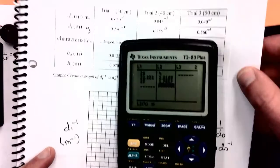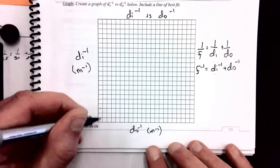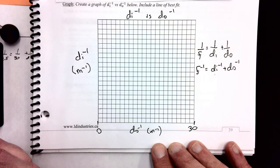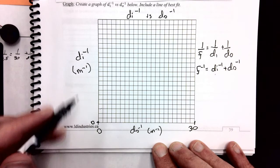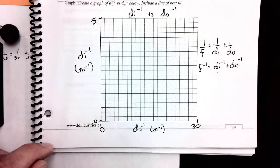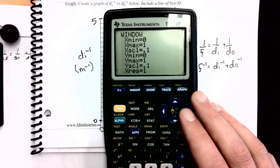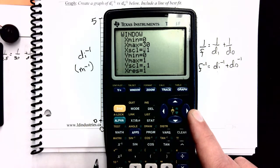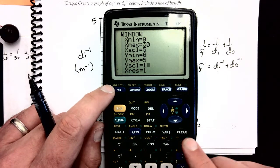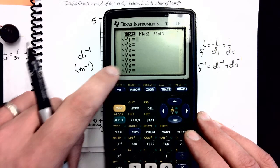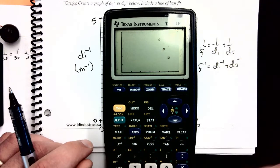For my x values I can probably go between 0 and about 30, since my biggest x value was 25. For my y values I'll go between 0 and maybe 5, since my largest y value is 4. I'll put that into my window settings — going up by fives on the x-axis and by ones on the y-axis. Before I display the data I'll go into the y equals menu to make sure there's no function showing up in the graph, and make sure Plot 1 is shaded in.